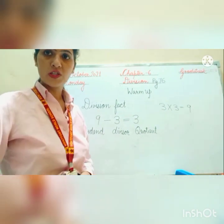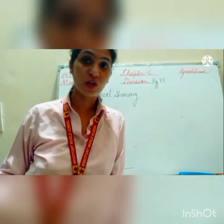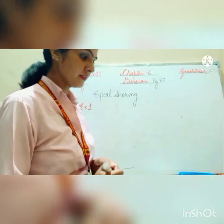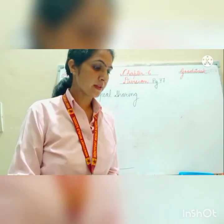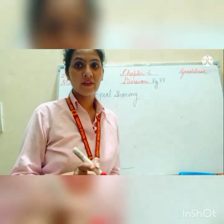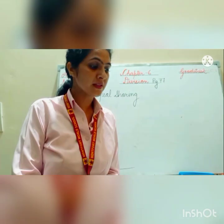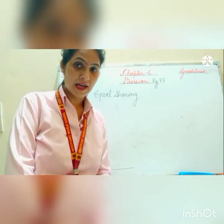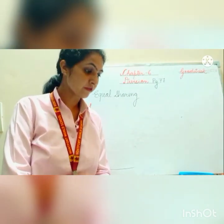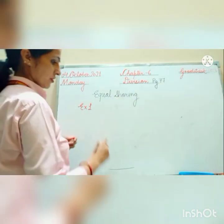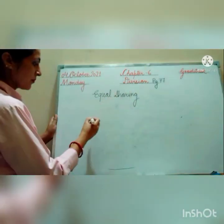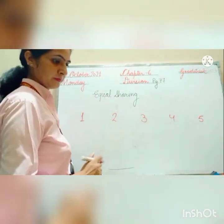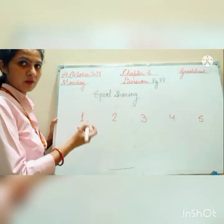I hope equal sharing is clear to you. Let us understand this concept with one more example — example number 1 on page number 77. Granny wants to divide 15 apples equally among 5 children. How many apples will each child get? Total apples are 15. Firstly we will see how she has started the distribution. Suppose there are 5 children — I am writing 1, 2, 3, 4, and 5 for the children.